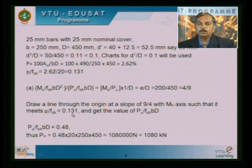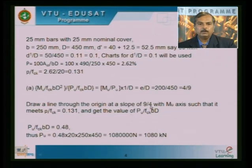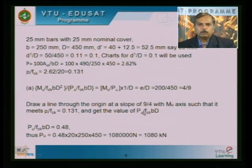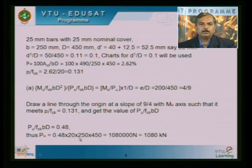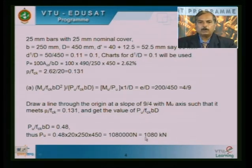Pick the point corresponding to P/Fck ≈ 0.131 on the interaction curve and read the value Pu/(Fck × B × D) = 0.48 from the vertical axis. To draw the eccentricity line, simply mark 4 cm horizontally and 9 cm vertically, join that point to the origin. Do not use the existing graph lines as those may not correspond to equal dimensions; draw the line based on the 4:9 ratio.